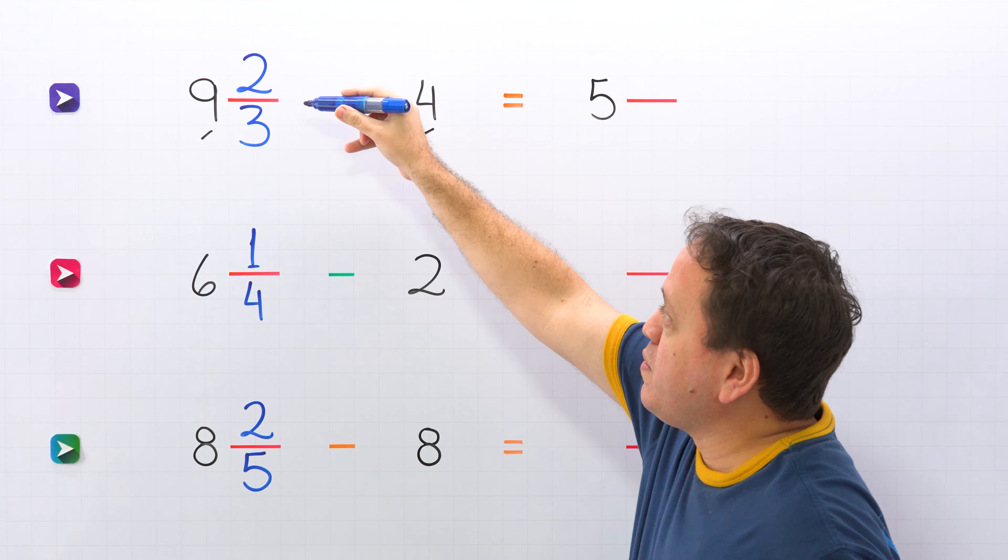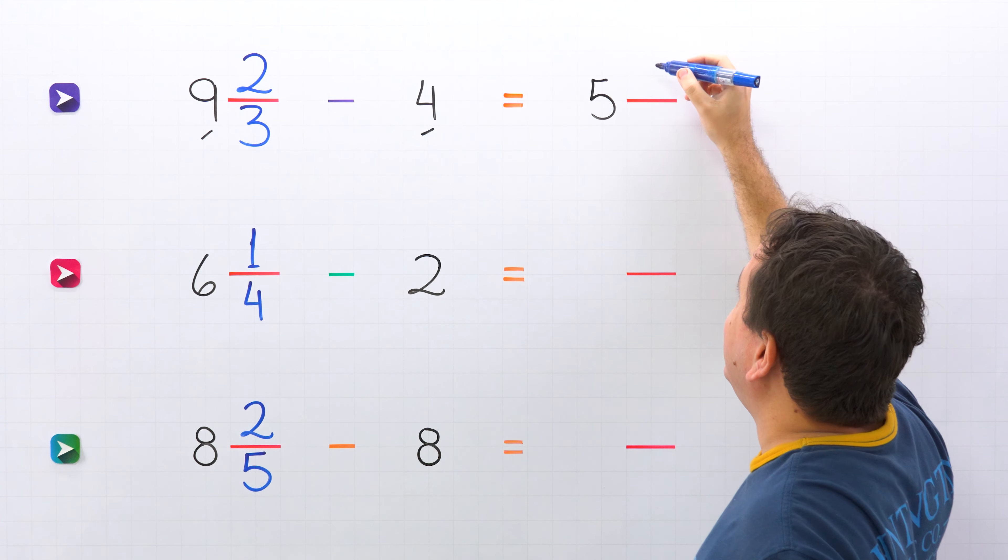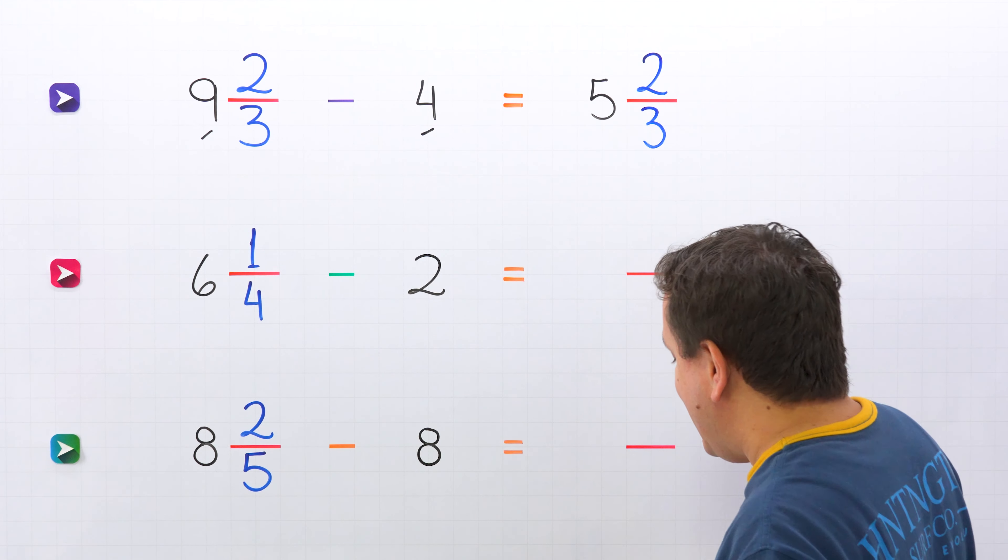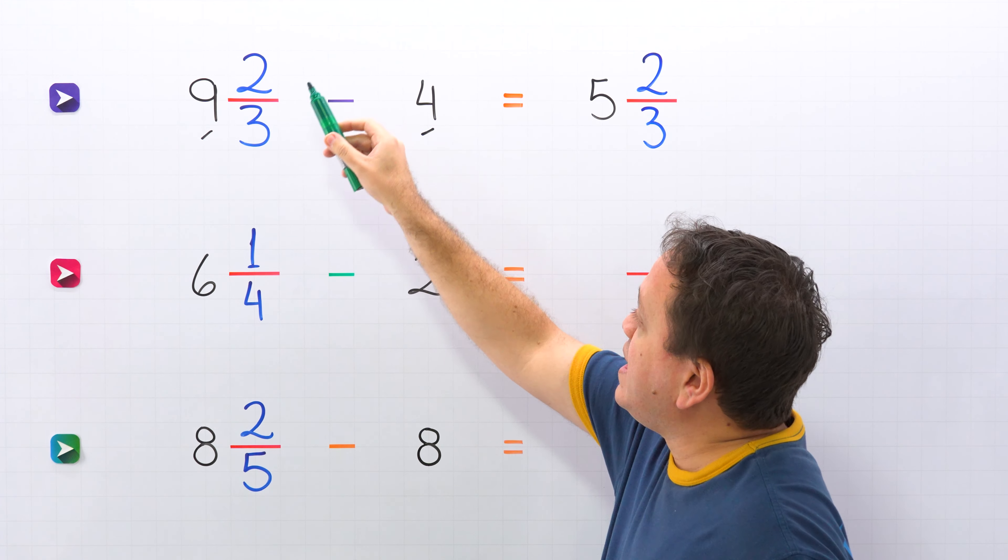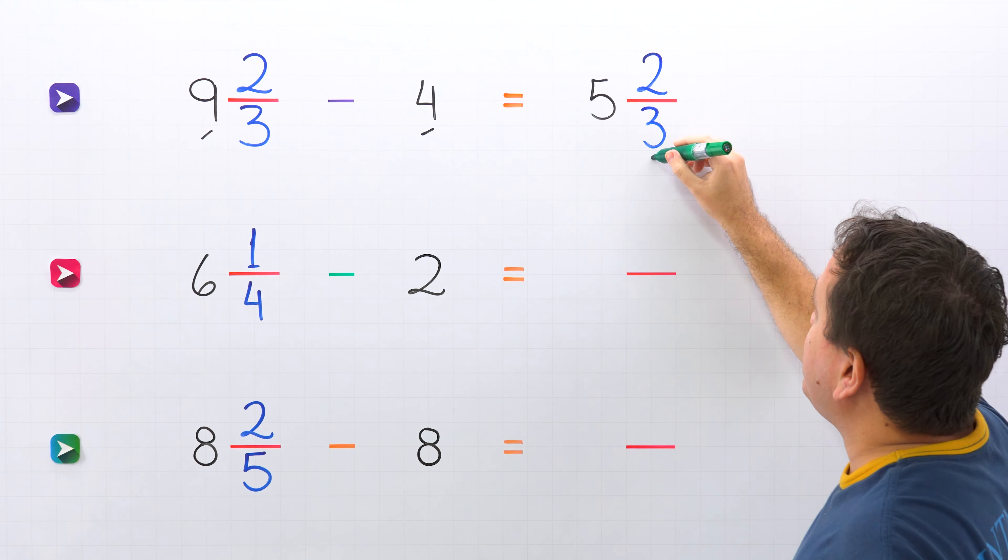And then we copy the fraction of the mixed number. In this case it's two thirds. Nice! We have the answer now. Nine and two thirds minus four gives us five and two thirds.